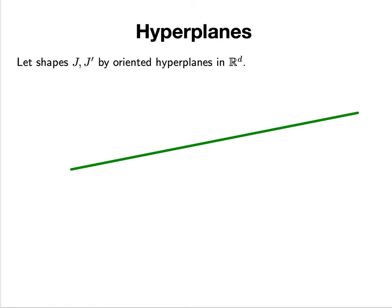Let's start with different types of shapes. First, we'll start with oriented hyperplanes in R^d. Let the two shapes we're considering be these oriented hyperplanes.